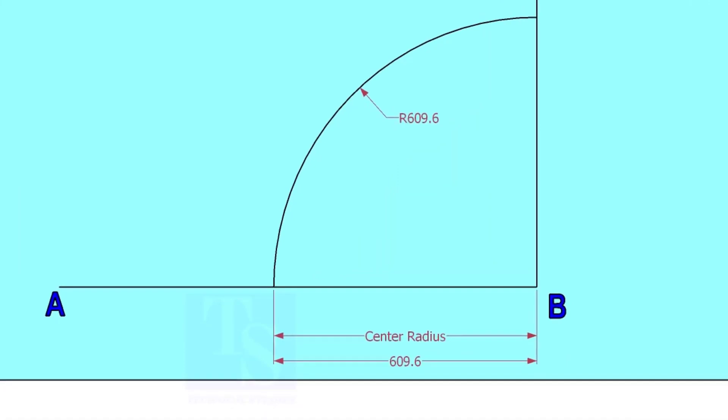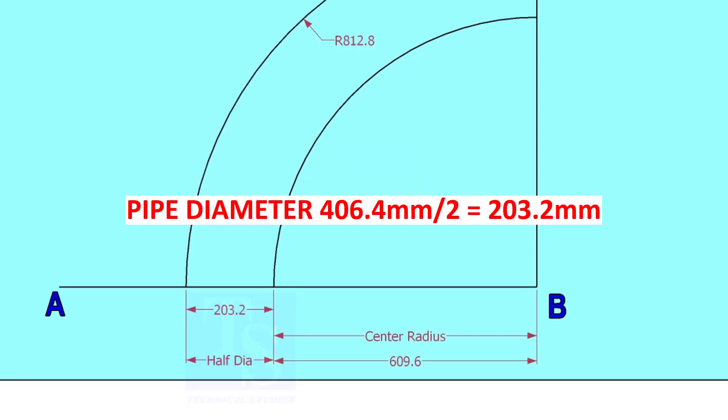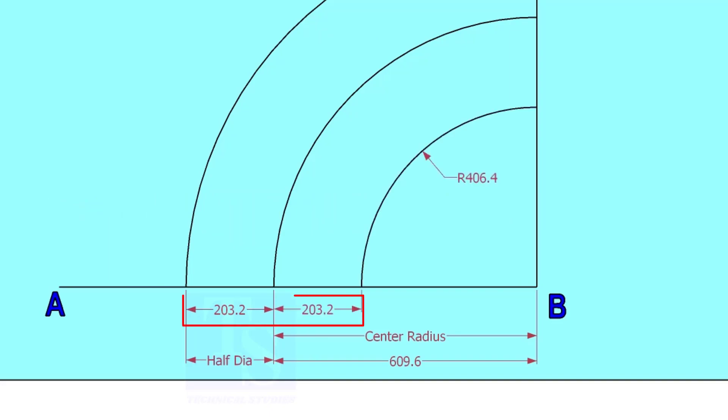Draw an arc with the center radius 609.6 millimeters. Mark the half OD arcs on both side of the center line.